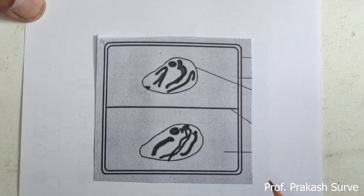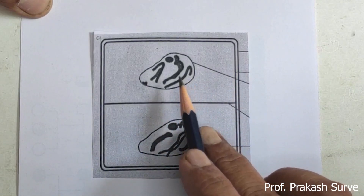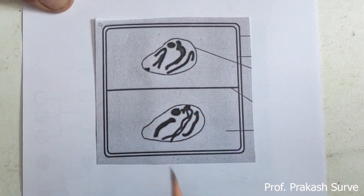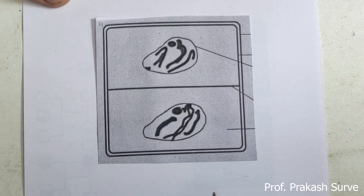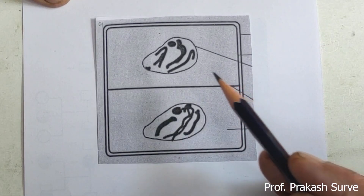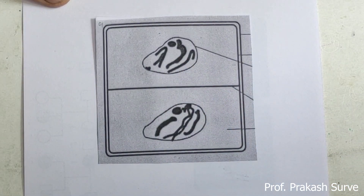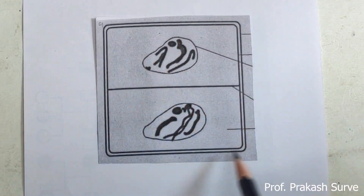Now we will see meiosis two. In meiosis two there is also karyokinesis two and cytokinesis two — karyokinesis two means division of the nucleus again. In prophase two of meiosis two, what we observe: the chromosomes become prominent, shorter, and thicker. The nucleolus as well as the nuclear membrane start disappearing.